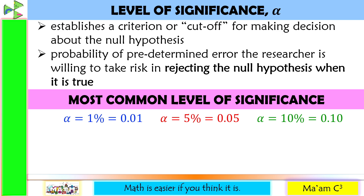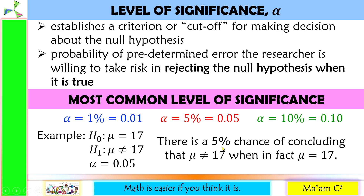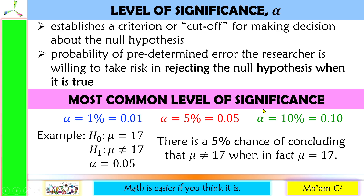Let's have an example. Null hypothesis: mu is equal to 17. Alternative hypothesis: mu is not equal to 17. Let us say we set our alpha equal to 5% or 0.05. This means there is a 5% chance of concluding that mu is not equal to 17 when in fact mu is equal to 17 — meaning you are rejecting the null hypothesis. The probability you are willing to take risk in committing that error is 5%. That is the level of significance — the probability of rejecting the null hypothesis when in fact it is true, and that is an error.